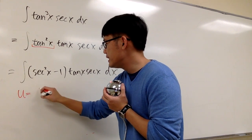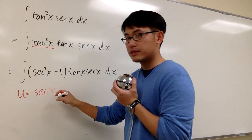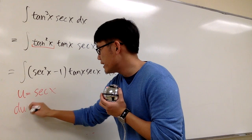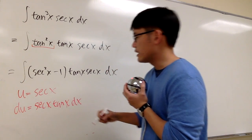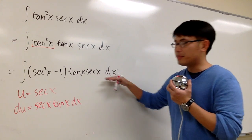That u equals to secant x, just secant x. And then if you differentiate that, you get secant x tangent x dx. And that's exactly this part, right?